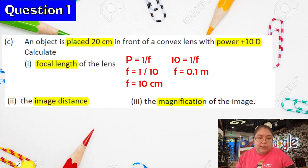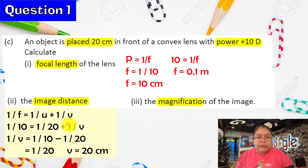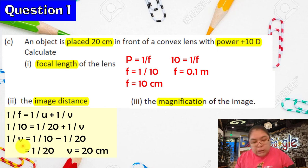Now calculate the image distance using the lens equation: 1/F = 1/U + 1/V. F = 10 cm, U = 20 cm. So 1/10 = 1/20 + 1/V. Rearranging: 1/V = 1/10 − 1/20 = 1/20. Therefore V = 20 cm.